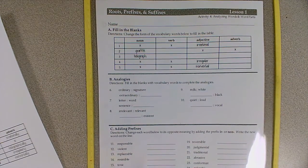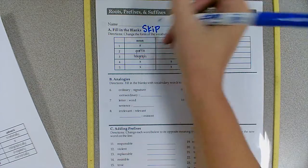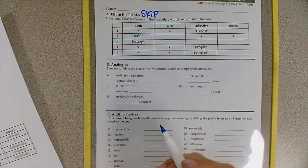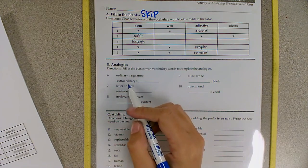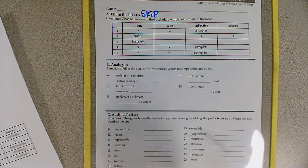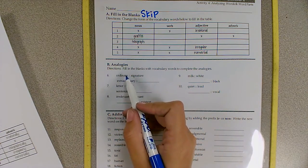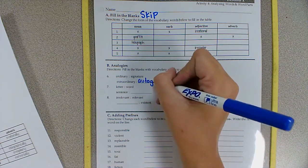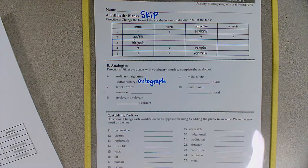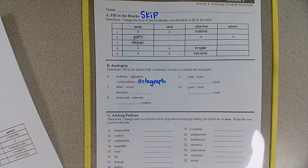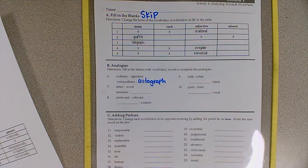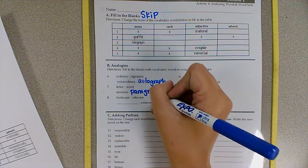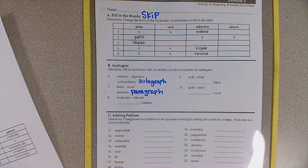Now we're looking at activity four. We're going to skip over part A, but you're welcome to do it if you'd like. We're going to go to part B, Analogies. So we read an analogy like this: Ordinary is to signature as extraordinary is to blank. The way that I think about it is an ordinary signature would be a signature, but the extraordinary version would be an autograph. Number seven, letter is to word as sentence is to blank. Letter is to word, sentence is to paragraph. A letter is a part of a word, and a sentence is a part of a paragraph.